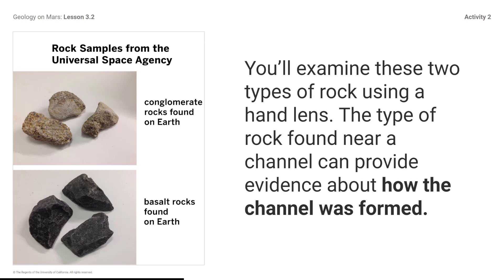Rock samples from the Universal Space Agency include conglomerate rocks found on Earth and basalt rocks found on Earth. You will examine these two types of rock using a hand lens. The type of rock found near a channel can provide evidence about how the channel was formed. Conglomerate is a type of rock that can form near channels formed by flowing water. Basalt is a type of rock that can form during a volcanic eruption and is often found near channels formed by flowing lava.